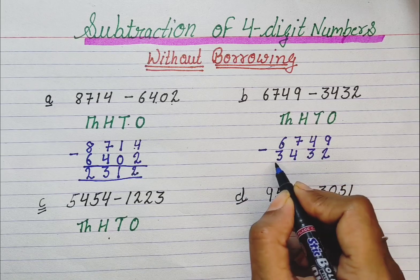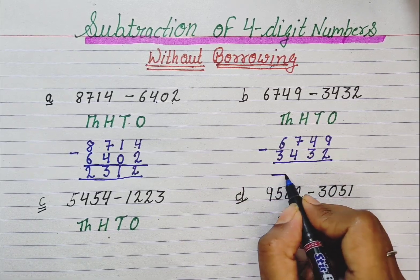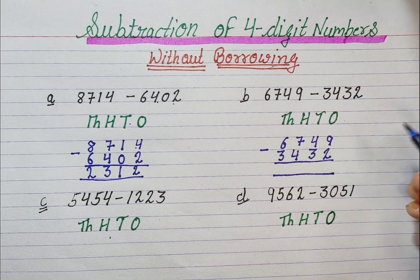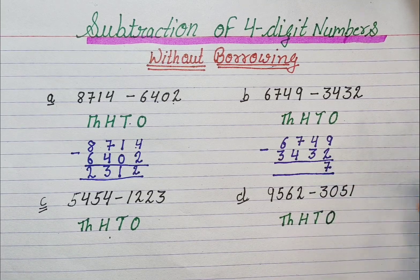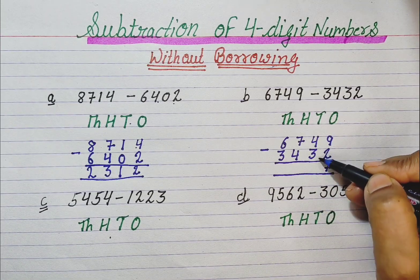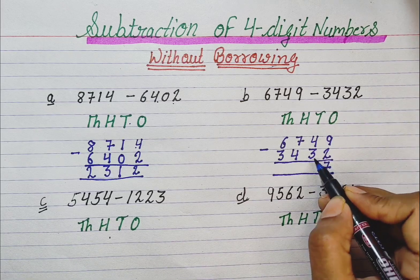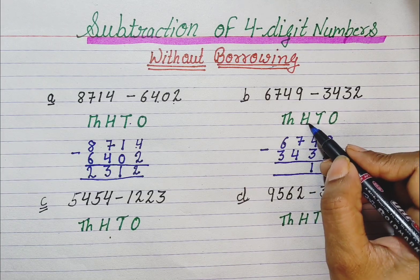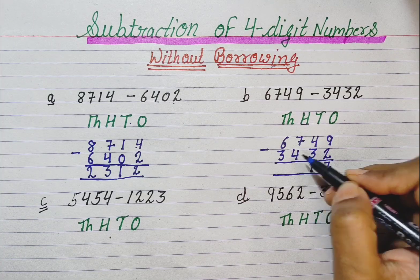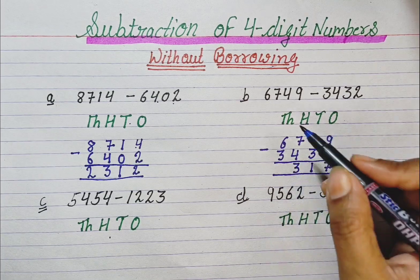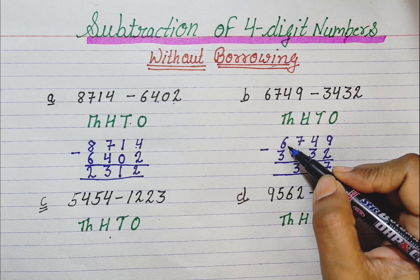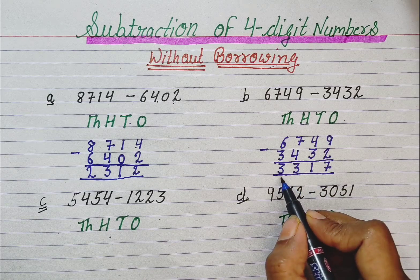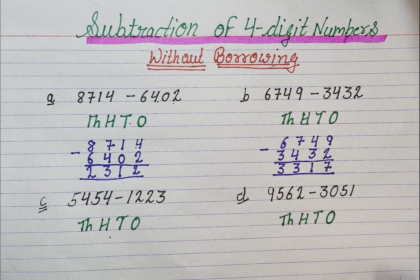Now we subtract them. First, we subtract the 1's digits: 9 minus 2 is 7. Now we subtract the 10's digits: 4 minus 3 is 1. Now we subtract the 100's digits: 7 minus 4 is 3. Now we subtract the 1000's digits: 6 minus 3 is 3. So the answer is 3317.